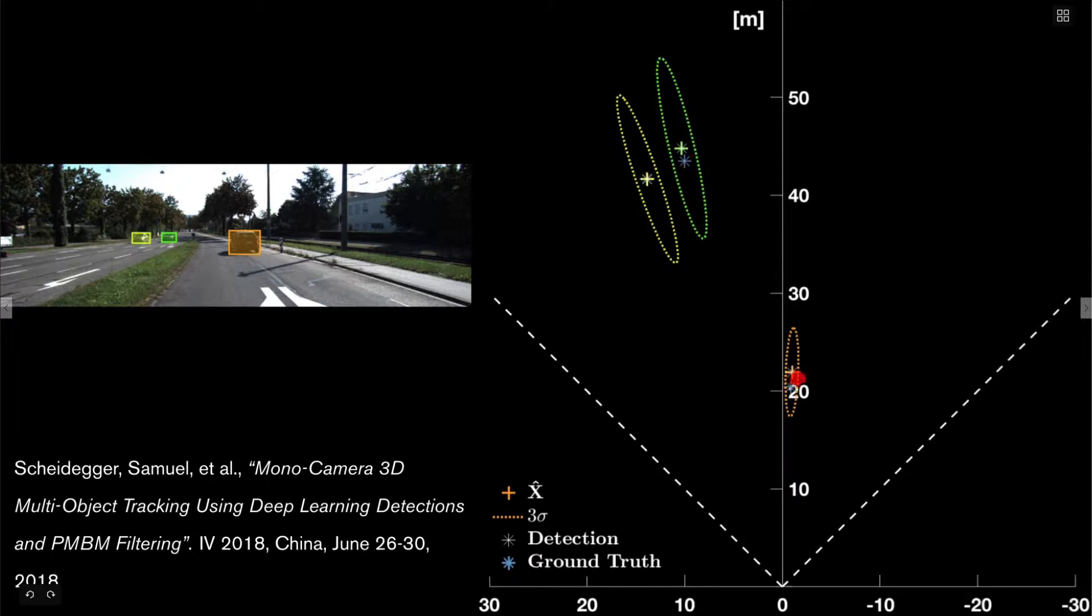And the stars, the actual positions of the vehicles. So ideally, we want our estimate, the plus markers, to be as close as possible to the true position of the vehicles, the stars, which would mean that our guess of where the vehicle is is accurate.